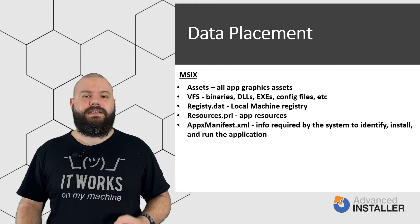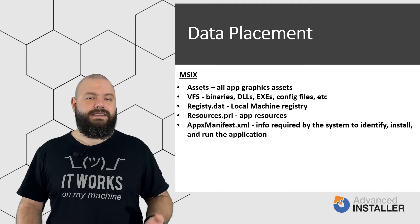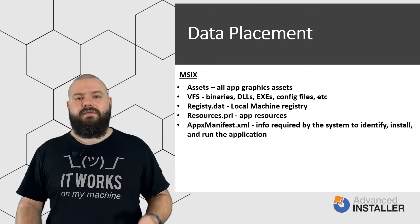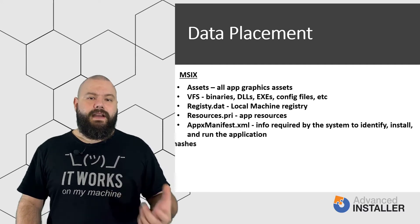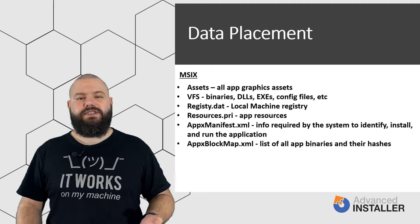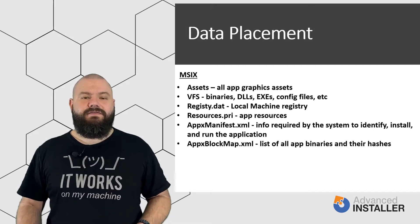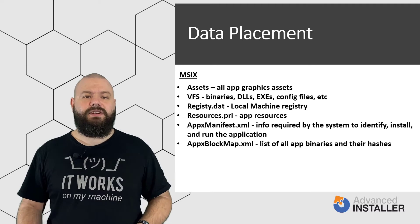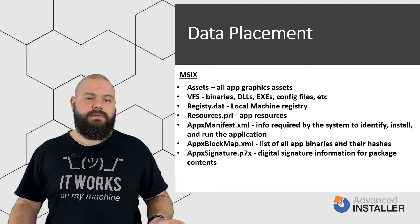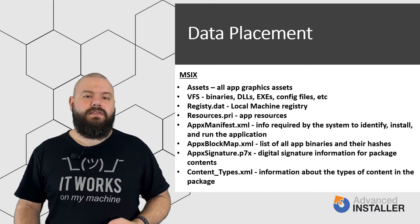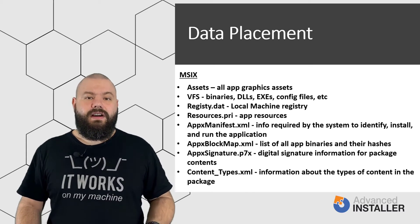The AppxManifest.xml is the main resource of the package — it contains all the information required by the system to identify, install and run the application, including files, shortcuts, firewall rules, dependencies and so on. The AppxBlockMap.xml is an automatically generated file containing a list of all the app's binaries and their hashes, used by the system for integrity checks and differential updates. The AppxSignature file stores the digital signature information for the package contents. The ContentTypes.xml contains information about the types of content in an MSIX package, used by the system at the time of installation.